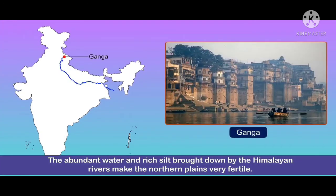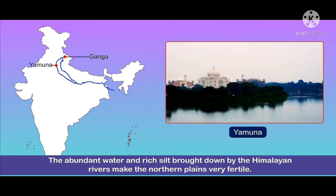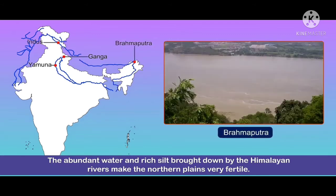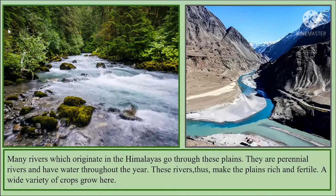Many rivers which originate in the Himalayas flow through these plains. These rivers are perennial rivers and have water throughout the year. These rivers thus make the Northern Plains rich and fertile and very suitable for cultivation, and a wide variety of crops are grown in the Northern Plains.